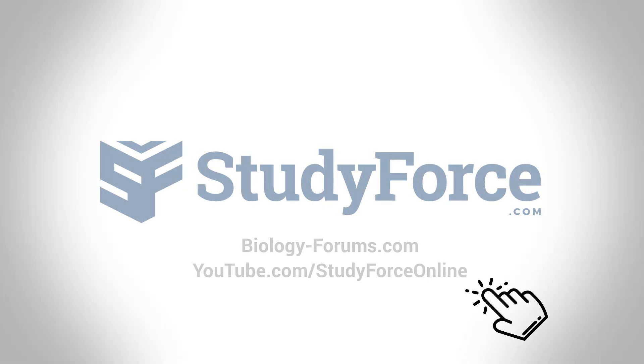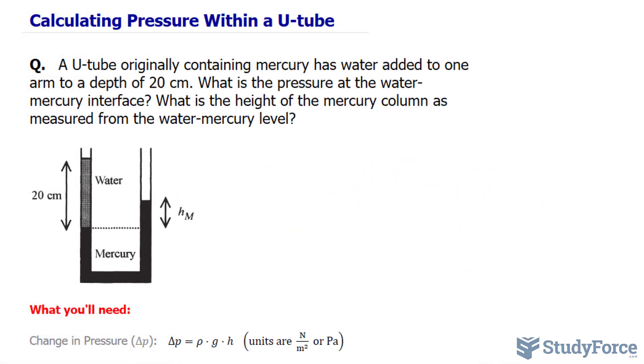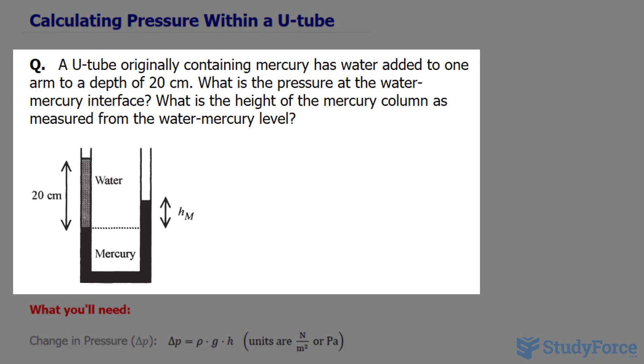In this lesson, I'll show you how to calculate the pressure within a U-tube. A U-tube originally containing mercury has water added to one arm to a depth of 20 centimeters, as shown in the diagram below.